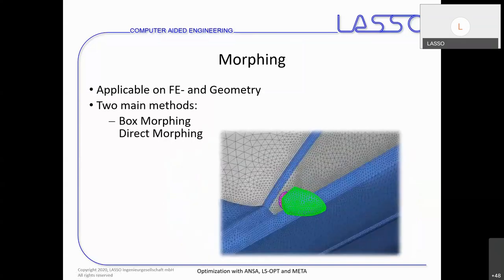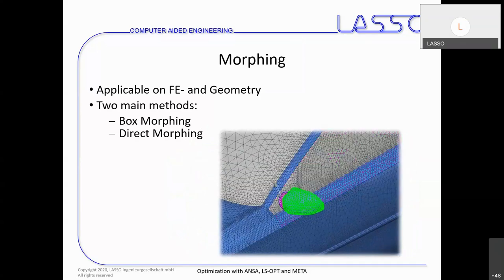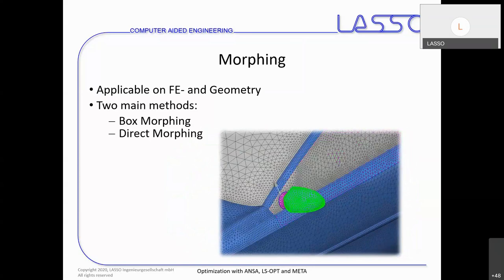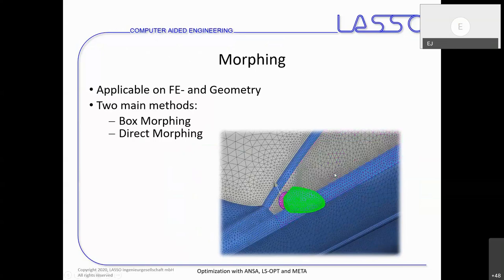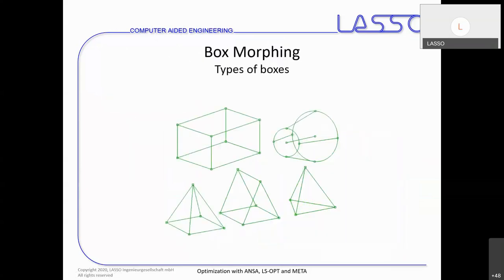The other possibility is so-called direct morphing. With direct morphing, no boxes need to be created — we can directly touch our geometry or meshes and define specific areas that should be moved.